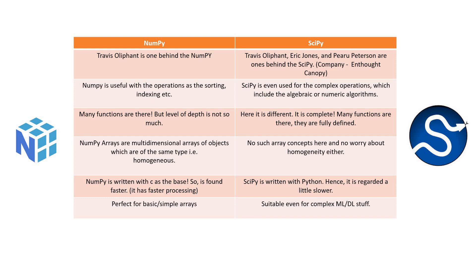NumPy arrays are multidimensional arrays of objects which are of the same type — homogeneity is a major characteristic here. When it comes to SciPy, there is no array concept and hence no homogeneity either. NumPy is written in C, so it is found to be a little faster, while SciPy is written in Python and is recorded as a little slower.